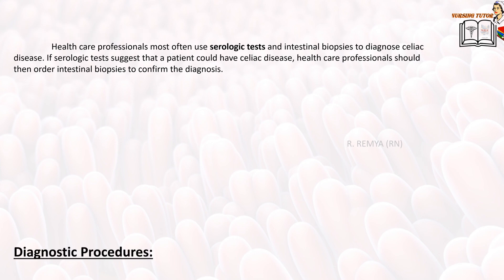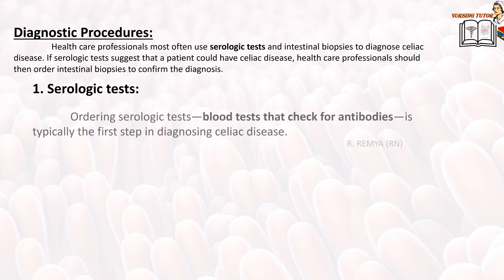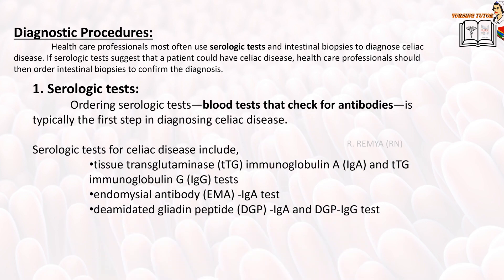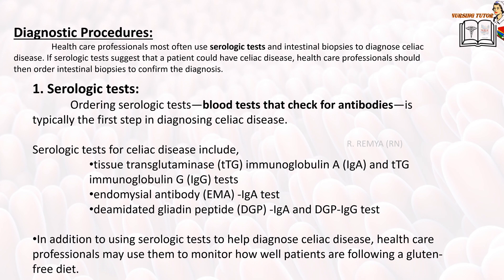Diagnostic procedures for celiac disease include serologic tests, intestinal biopsies, and genetic tests. Health professionals most often use serologic tests and intestinal biopsies to diagnose celiac disease. If serologic tests suggest that a patient could have celiac disease, healthcare professionals should order intestinal biopsies to confirm the diagnosis. Ordering serologic tests is typically the first step.